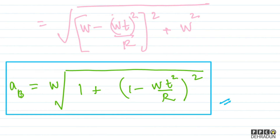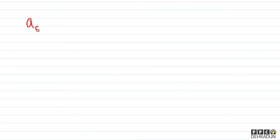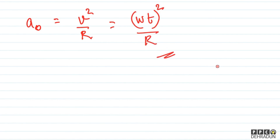For point O, the tangential acceleration is zero because it is doing pure rolling on the ground — the translational acceleration W and alpha R cancel each other out. However, centripetal acceleration remains. So the acceleration of point O is simply v square upon R, where v equals W into t, giving acceleration of point O equal to (Wt) squared upon R.